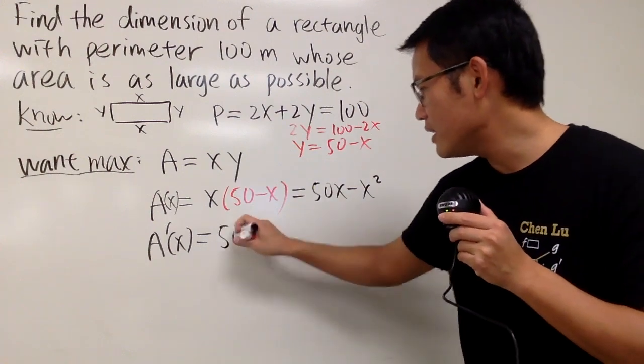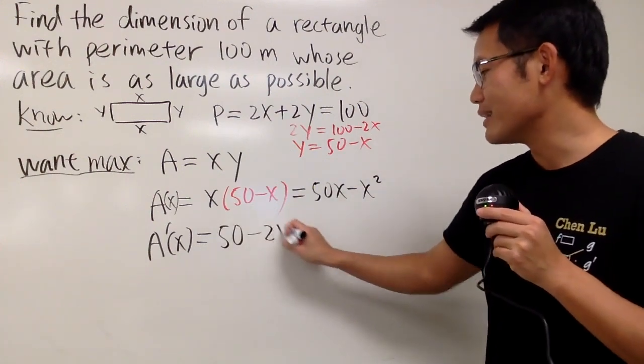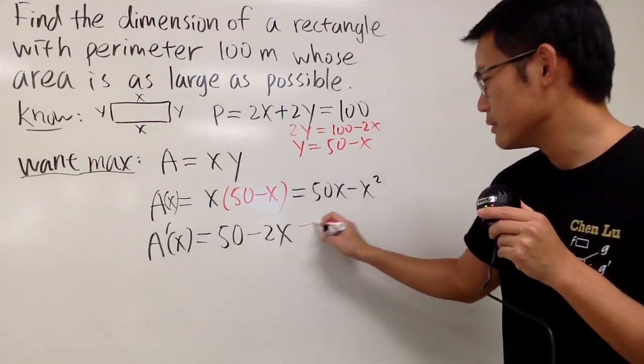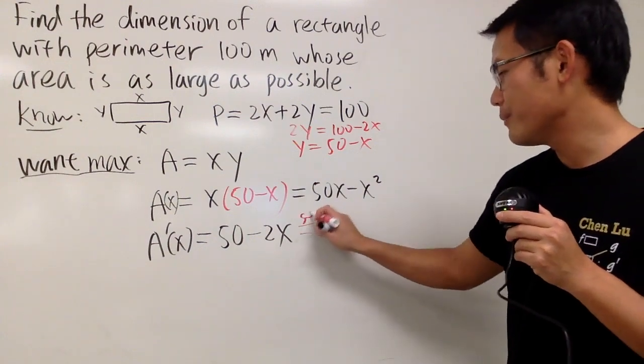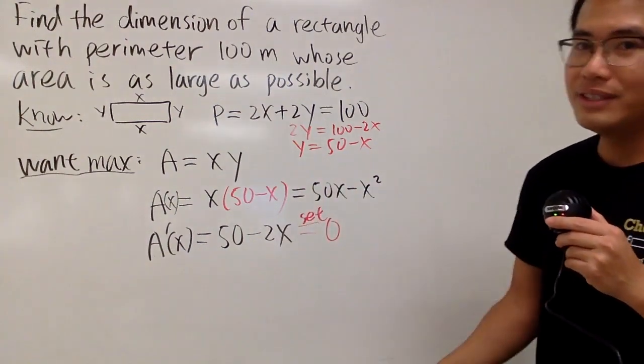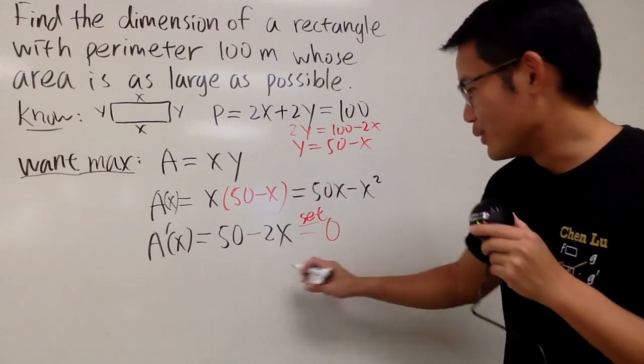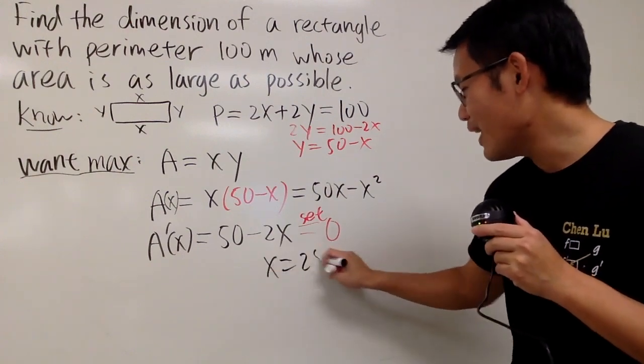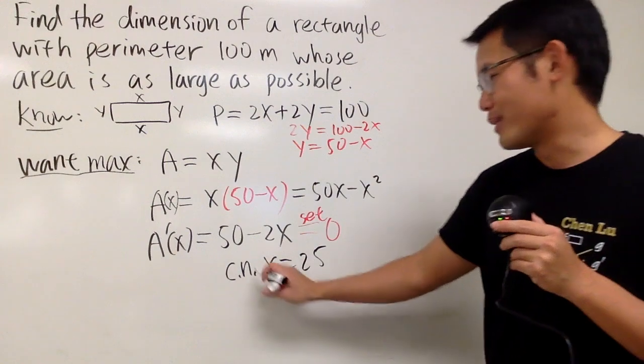Differentiating this, we get 50. Differentiating that, we get minus 2x. And of course, set this to be 0, and solve this, right? Do whatever you need to do, you will get x is equal to 25, and that's going to give you the critical number.